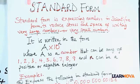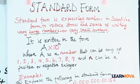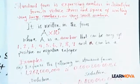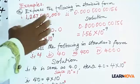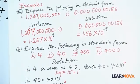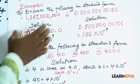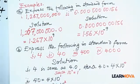Let us look at the first example, which involves expressing a number such as one billion, two hundred and sixty-seven million in standard form. That is not to say this is the largest of all numbers, but it is one of those very large numbers that takes a lot of space and might be stressful to deal with. We also have another number: 0.00000000156. How do we deal with this kind of number?